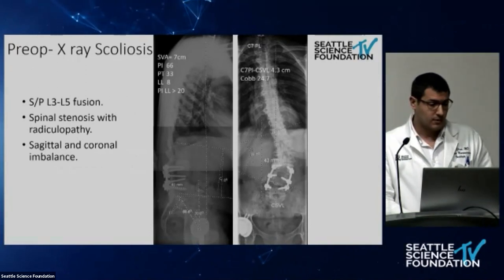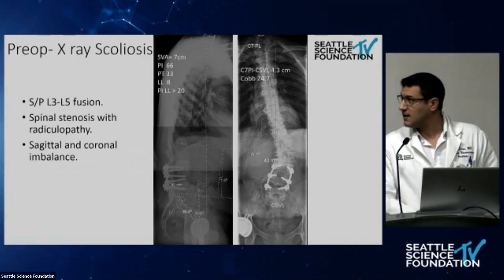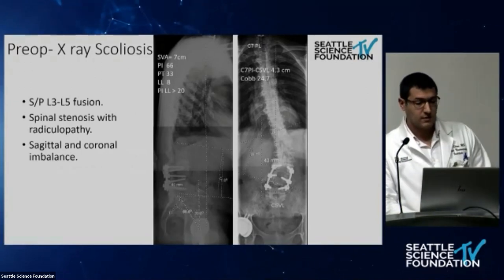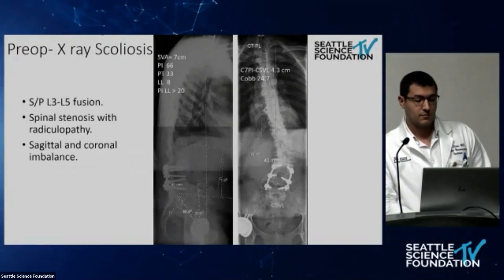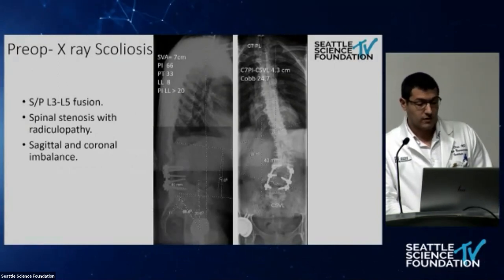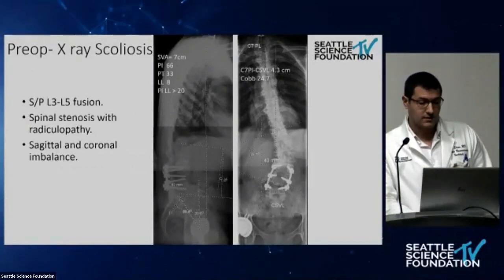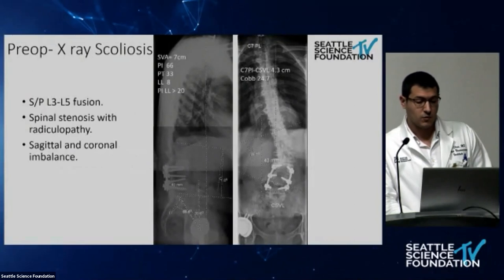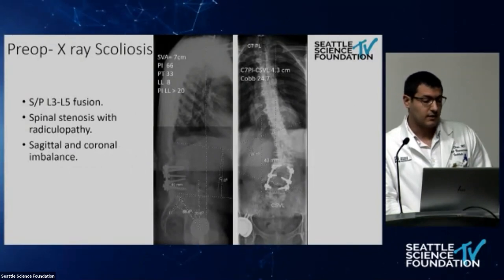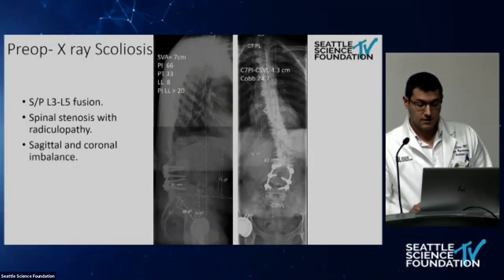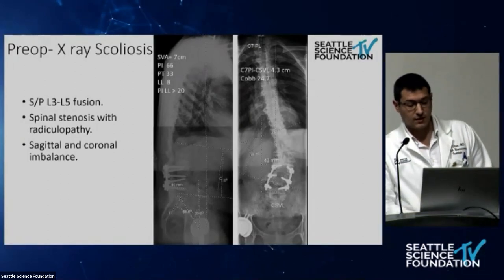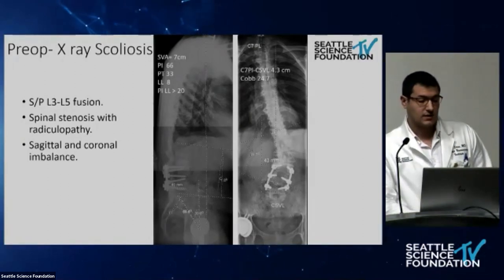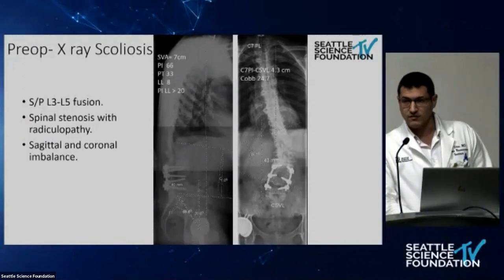Her pre-op scoliosis parameters are as follows: SVA is around 7 centimeters, PI 66, PT 33, lumbar lordosis 8, and PI-LL mismatch was way more than 20. The difference between the C7 plumb line and CSVL was around 4.3 with a curve angle of 24 degrees. So she had both sagittal and coronal imbalance, and as you can see she has some kind of flat back.